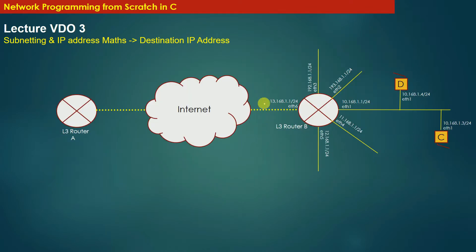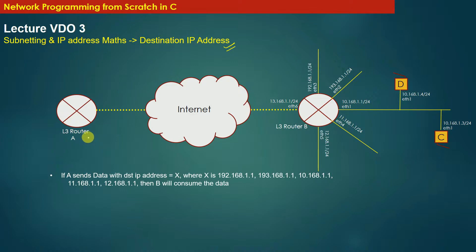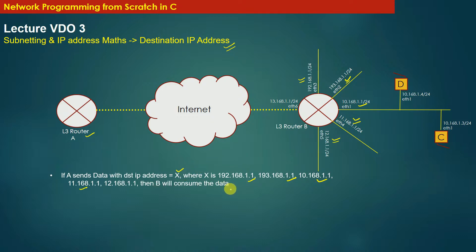Let us try to understand the destination IP address in real sense. Suppose the L3 router A wants to send data with destination IP address X, where X could be 192.168.1.1, 193.168.1.1, 10.168.1.1, 11.168.1.1, or 12.168.1.1. If router A sends the data with destination IP address equal to any local interface of router B, then router B will receive and consume the data.